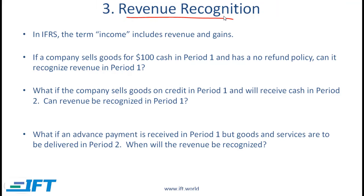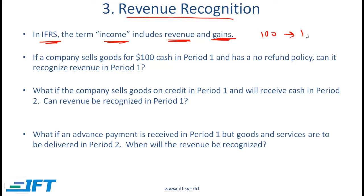Coming now to revenue recognition, which is a very important topic. Under IFRS, the term income includes both revenue and gains. Gains generally refer to gains on the sale of equipment or other long-term assets. So a company selling laptops reports revenue from laptop sales, but if it also sells a piece of equipment with a book value of 100 for 110, that gain of 10 is shown on the income statement as a gain. The term income applies to both core revenue and gains.